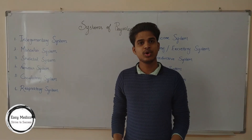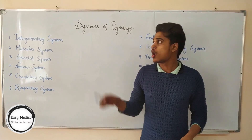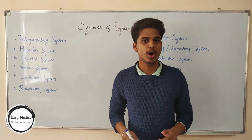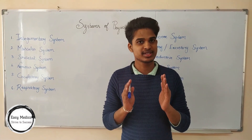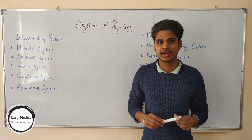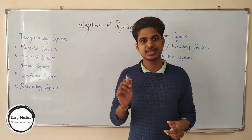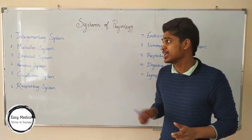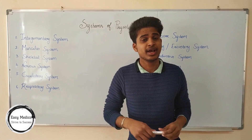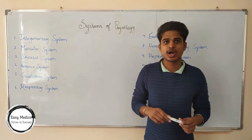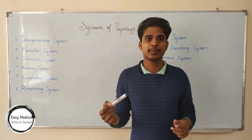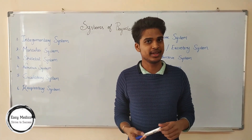As I mentioned before, an organ system is a group of anatomical structures that work together to perform a specific function. There are 11 main systems in the human body. Without these organ systems, our body could not function correctly.